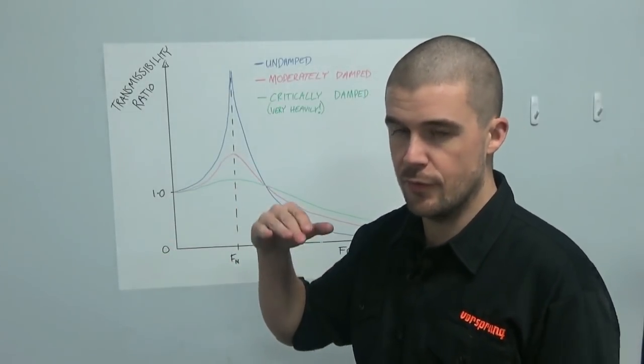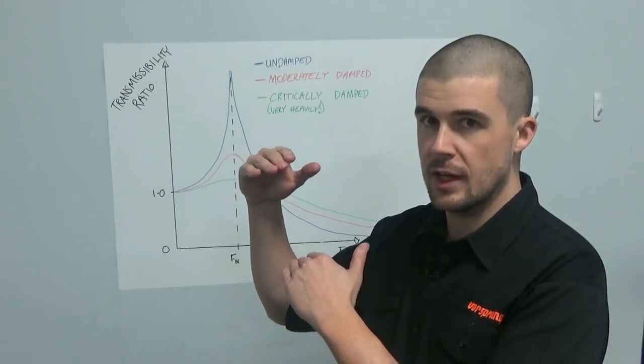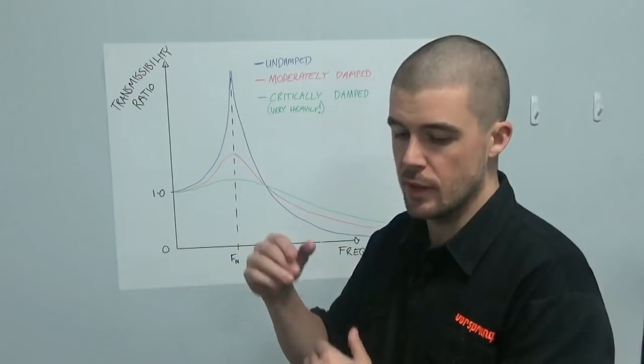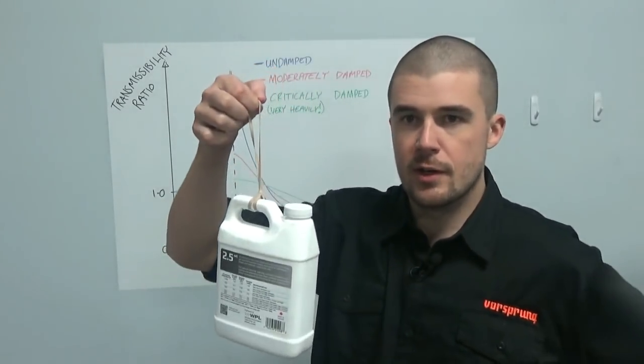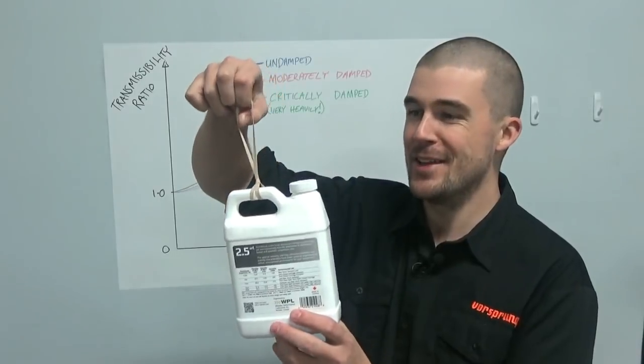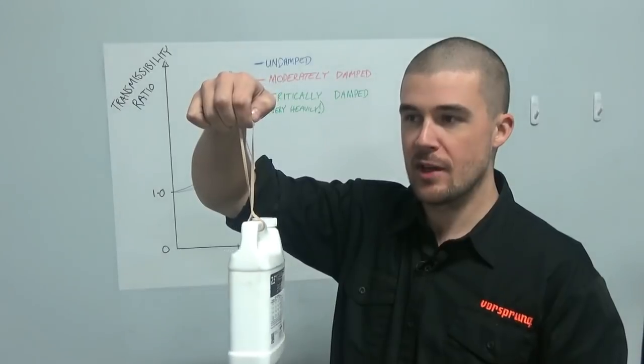And that means however far the input moves, it will take the sprung mass with it. And so what that means, I'm going to use this bottle of oil here on a rubber band to illustrate. So what that means is that in a steady state, this is the sprung mass, this is the spring.